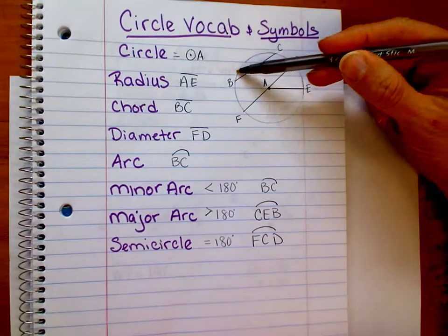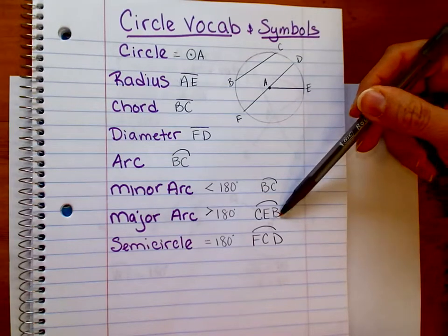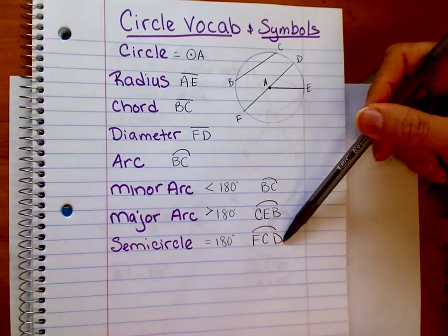But I wouldn't say CF, because CF means it's a minor arc. You have to have three capital letters to name a major arc or a semicircle arc.